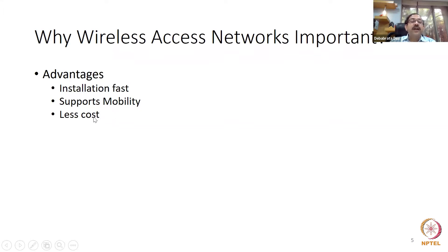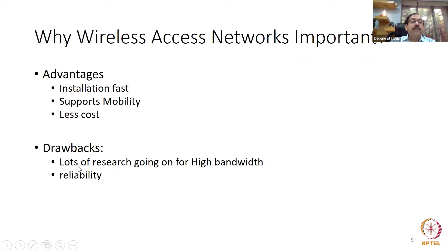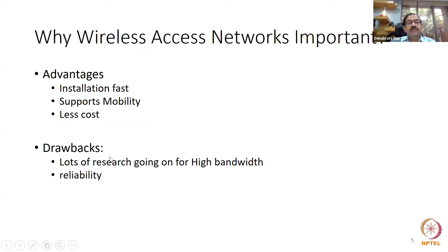Wireless is also less costly. Drawbacks: lots of research is ongoing for high bandwidth — wireless cannot give as much bandwidth as optical (like 10 gigabits), but research is progressing from 100 megabits toward one gigabit. Also, reliability is a challenge because wireless has the possibility of signal loss, so a lot of research is going on for reliability and bandwidth.